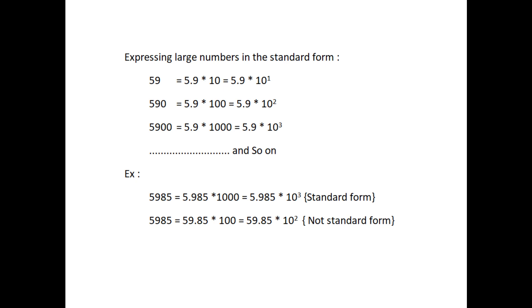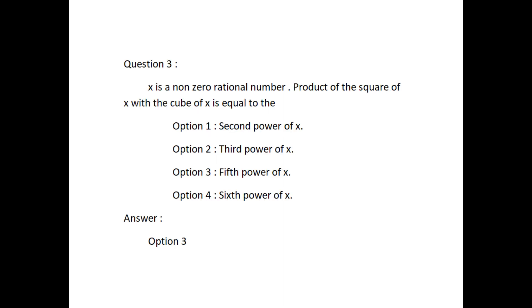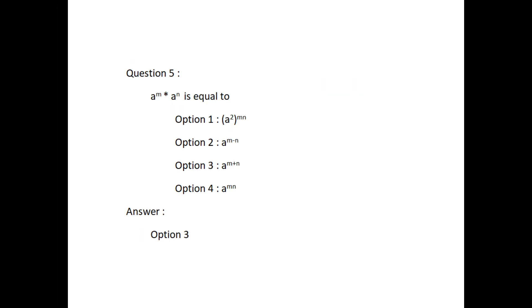For example, 5,985 equals 5.985 into 1000, which is equal to 5.985 into 10 to the power 3. Note that 5.985 can also be expressed as 59.85 into 100, or 59.85 into 10 to the power 2, but these are not the standard form. Thank you.